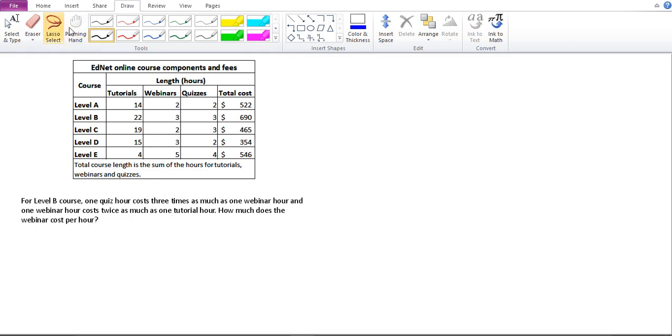We need to mark these unknowns. You've got quizzes—what's the relationship to webinars? It costs three times the webinars. Then you've got webinars, and they are twice as costly as tutorials. Note that Q stands for quiz, W stands for webinar, and T stands for tutorial.